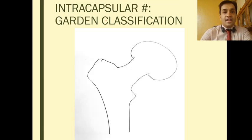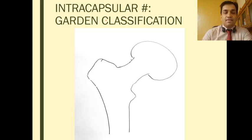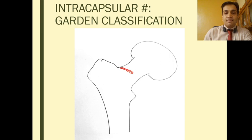For intracapsular fractures, the Garden classification is used. Garden Type 1 is a partial fracture in valgus impaction.